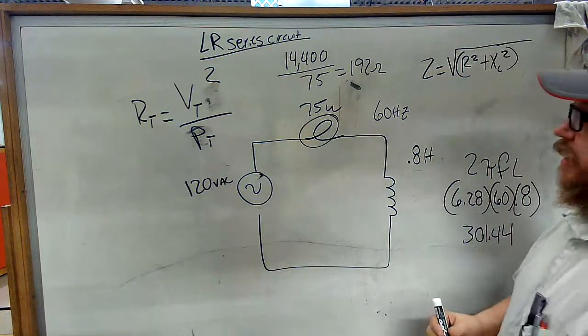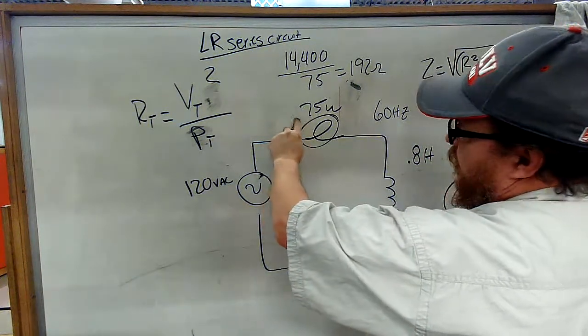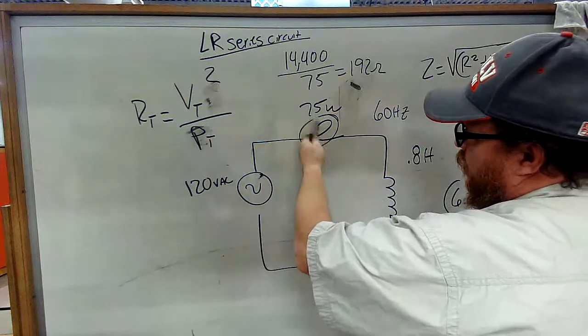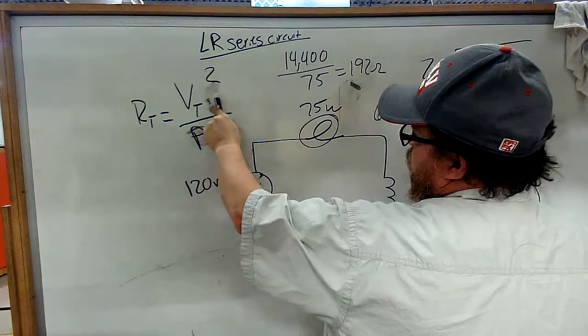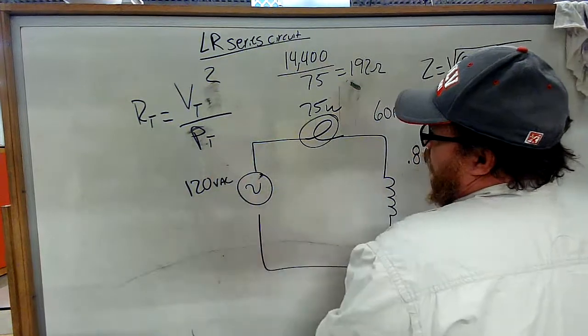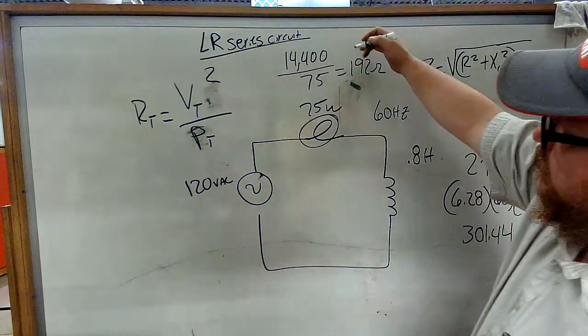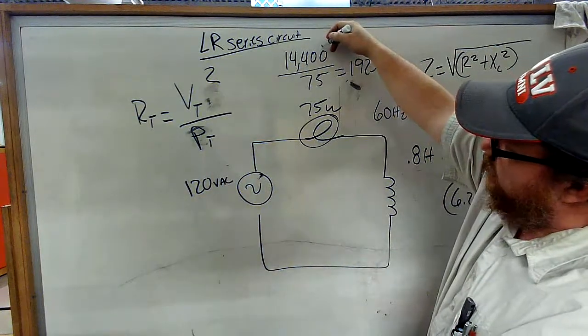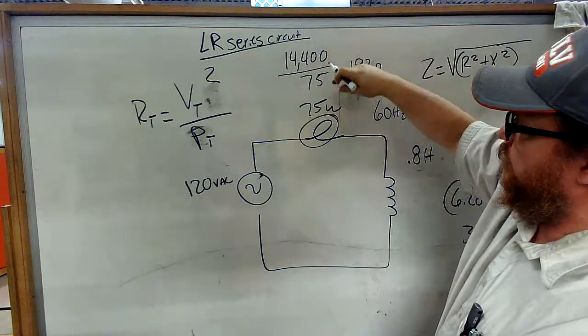Alright, to find my R, my resistance here, since there's only one resistor which is the lamp, R total equals V total squared divided by power total. So 120 squared is 14,400 divided by 75.